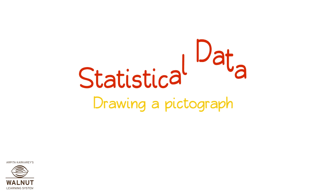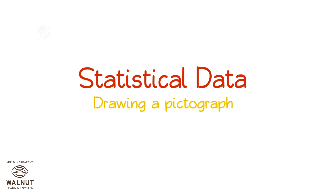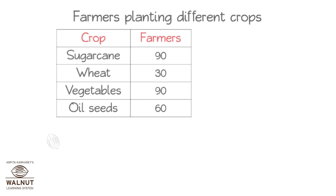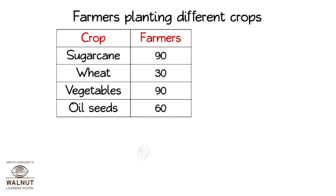Statistical Data: Drawing Pictographs. Look at the chart which shows how many farmers are planting different crops in a village. We have to make a pictograph of this data. We can choose a good symbol like a farmer to show the number of farmers.